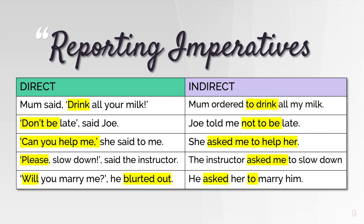For 'Can you help me? She said to me' — the reported version is 'She asked me to help her.' Just add 'to' before the main verb. For 'Please slow down, said the instructor' — the indirect would be 'The instructor asked me to slow down.' To slow down — the main verb is with the particle 'to.' For the last example, 'Will you marry me? He blurted out' — since 'will' is used for polite requests, you report it as 'He asked her to marry him.'